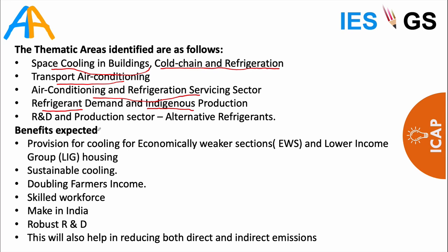Expected benefits include provision of cooling for economically weaker sections and low-income group housing — where design and materials should reduce cooling demand. This is integrated into the Pradhan Mantri housing scheme. Other benefits include sustainable cooling that doesn't consume excess environmental resources, doubling farmers' income through cold chain and refrigeration facilities, production of a skilled workforce, Make in India for R&D with indigenous solutions, and reducing both direct and indirect emissions.